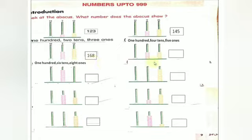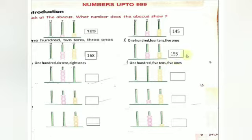Come to the next one. In the 100's place, 1 bead — so 100. In the 10's place, 5 beads — so 5 tens. In the 1's place, 5 beads — so 5 ones. 100, 5 tens, 5 ones — 1, 5, 5. What is the number? 155. Understood, children?